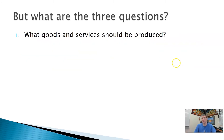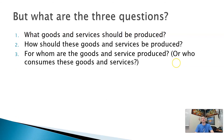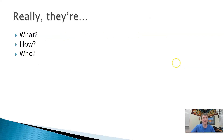So we have three economic questions. The first question is: what goods and services should be produced? The second one is: how should these goods and services be produced? And the third one is: for whom are the goods and services produced? Or simply, who consumes the goods and services? If you want to make it very basic, the three questions are: what, how, and who?